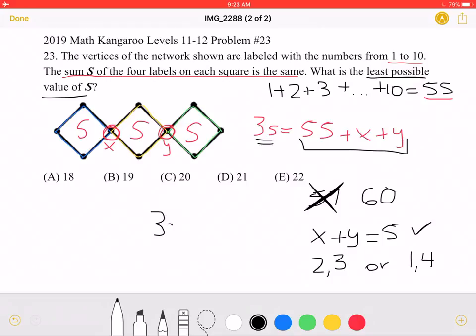That means that 3s would be equal to 60, meaning that s would be equal to 20. This is answer choice C.